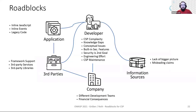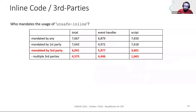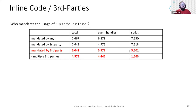The company might also have contracts with certain advertisement vendors, so the developer cannot freely choose which third parties to use. But are third parties really such a problem for CSP? In a study by Marius Steffens, it was shown that many insecure practices in CSP — like 'unsafe-inline' — were not caused by first-party code, but rather by third parties that mandate the usage of 'unsafe-inline'.